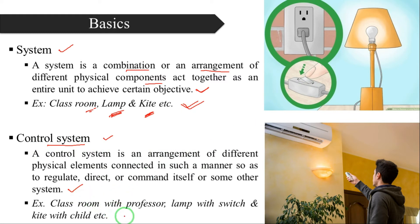For example: classroom with professor, lamp with switch, kite with child. A classroom with a professor means the classroom consists of students, benches, everything. There is a professor in the classroom who is controlling the students. That combination — a controller and a system — is called a control system.